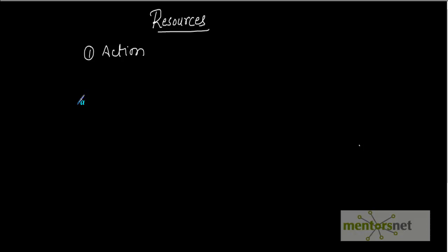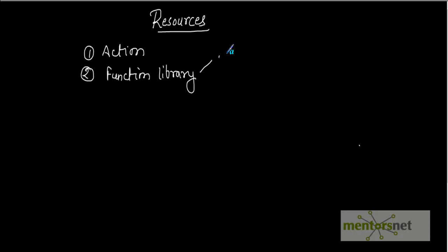In this video we will just see the types of resources; the detailed description of each resource is covered in a separate video. The second resource is the Function Library, where you can store your functions. This function library can be of two types: the first is the QFL extension and the second is the VBS extension. QFL stands for QTP Function Library, whereas VBS stands for VBScript file. You can create lines of code that can be used as a function, and that function will be stored into this library.